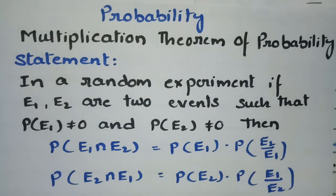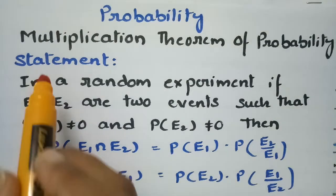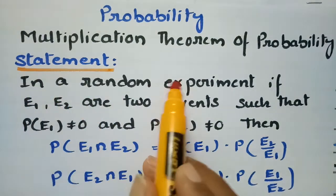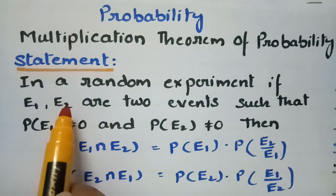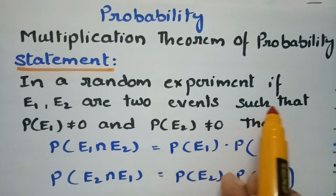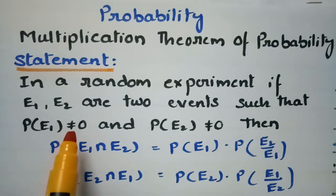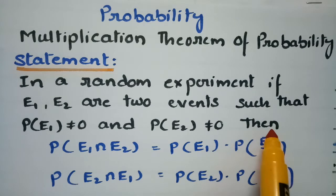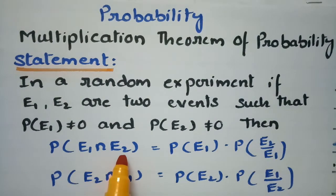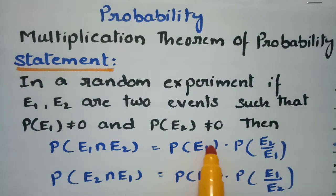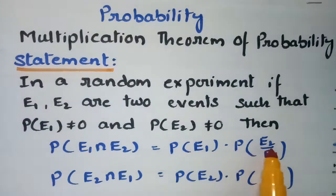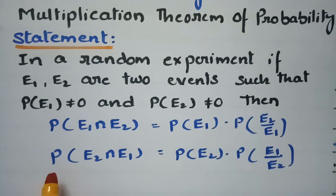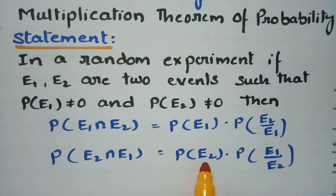This video is on the Multiplication Theorem of Probability. The theorem states that in a random experiment, if E1 and E2 are two events such that P(E1) ≠ 0 and P(E2) ≠ 0, then P(E1 ∩ E2) = P(E1) · P(E2|E1), and also P(E2 ∩ E1) = P(E2) · P(E1|E2).